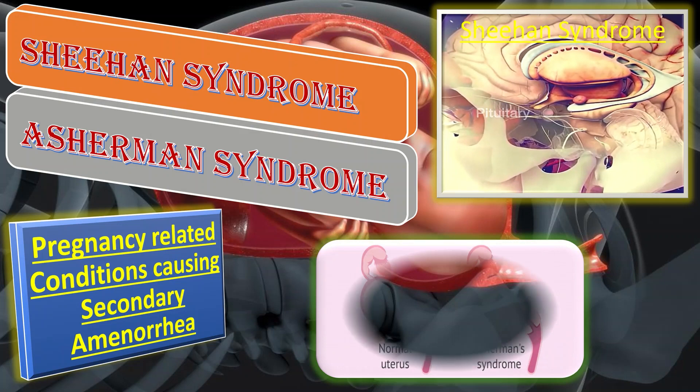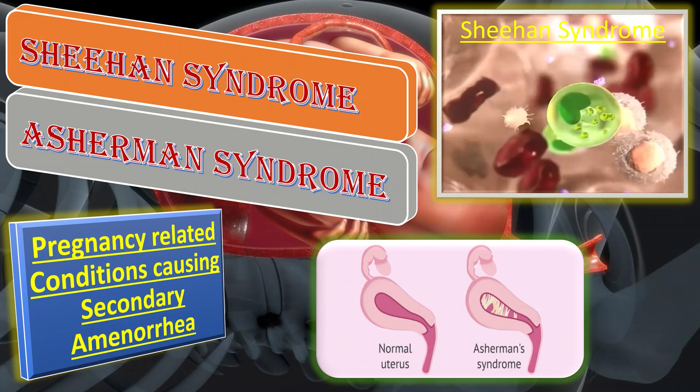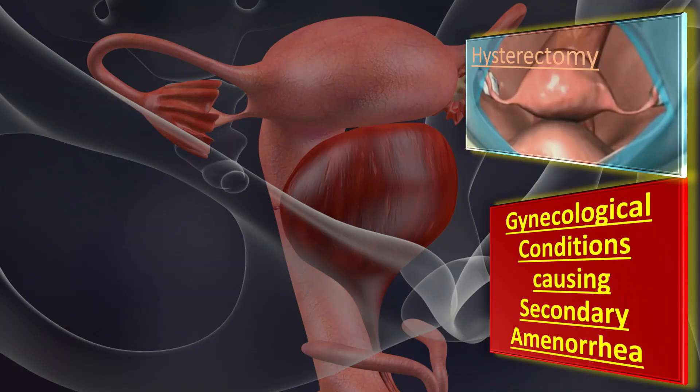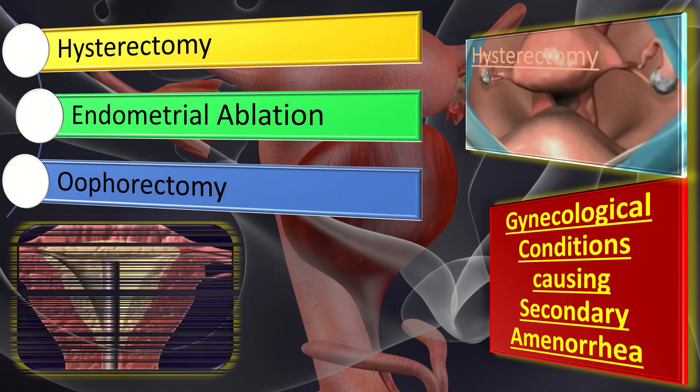We may have certain pregnancy-related conditions causing secondary amenorrhea, and those include Sheehan syndrome and Asherman syndrome.